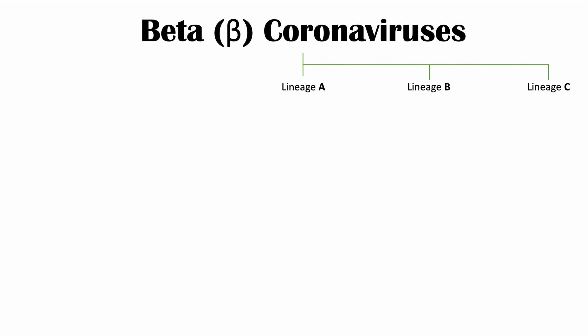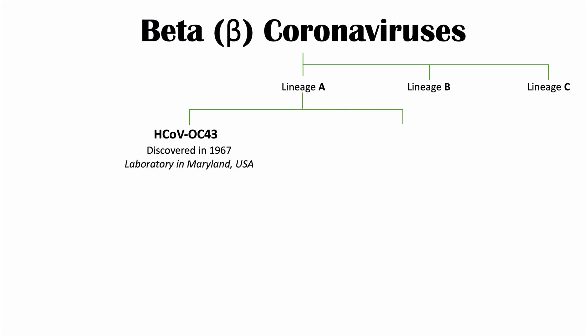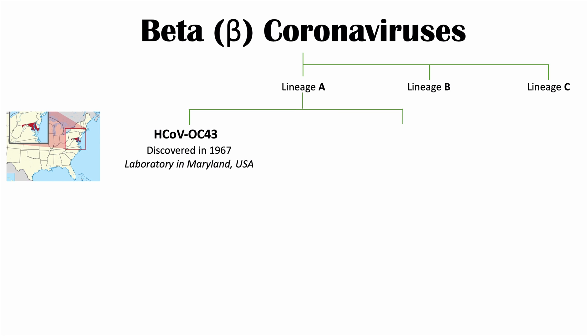The next group is the beta coronaviruses, which have three lineages: A, B, and C. In lineage A, there are two beta coronaviruses that cause disease in humans. The first is HCoV-OC43, discovered in 1967 in a laboratory in Maryland, United States. This is actually the most common strain of coronavirus — you can remember OC as "overly common." Among the HCOV strains, this coronavirus is more likely to cause the most severe presentations.